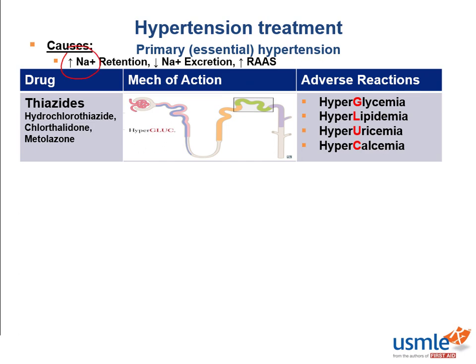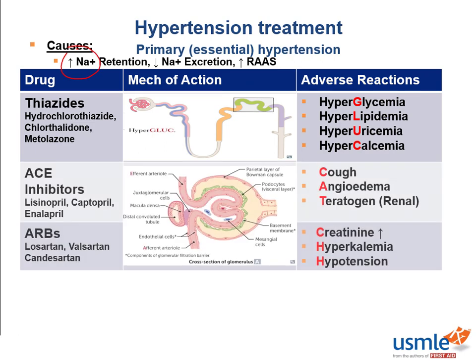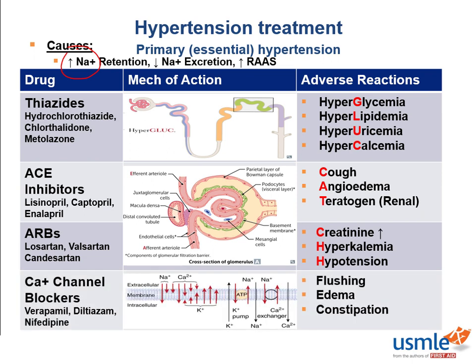We can also give angiotensin-converting enzyme inhibitors, or ACE inhibitors, as well as ARBs in order to decrease angiotensin's vasoconstrictive effects. Additionally, we can give calcium channel blockers that antagonize the vascular smooth muscle vasoconstriction we discussed previously. These would decrease total peripheral resistance.